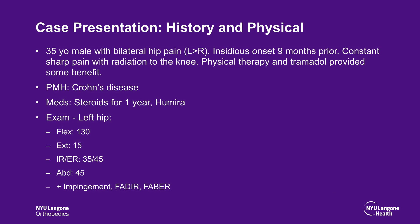This is a case of a 35-year-old male who presents with bilateral hip pain, left greater than right. The pain was insidious in onset and began 9 months prior to presentation. It is constant and sharp and radiates to the knee. Trial of physical therapy and tramadol provided limited benefit. He has Crohn's disease and previously used steroids for a year and is now on Humira.